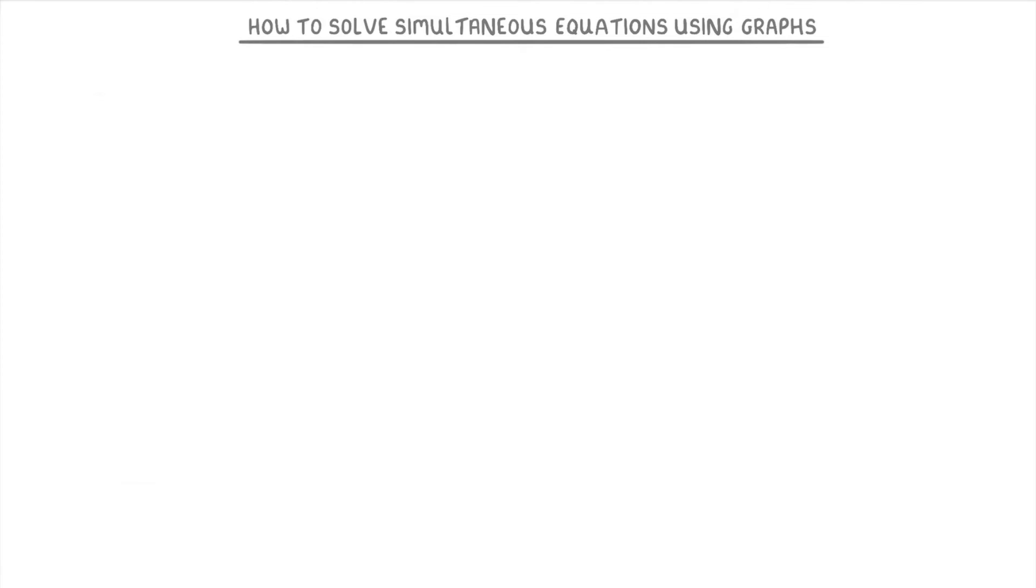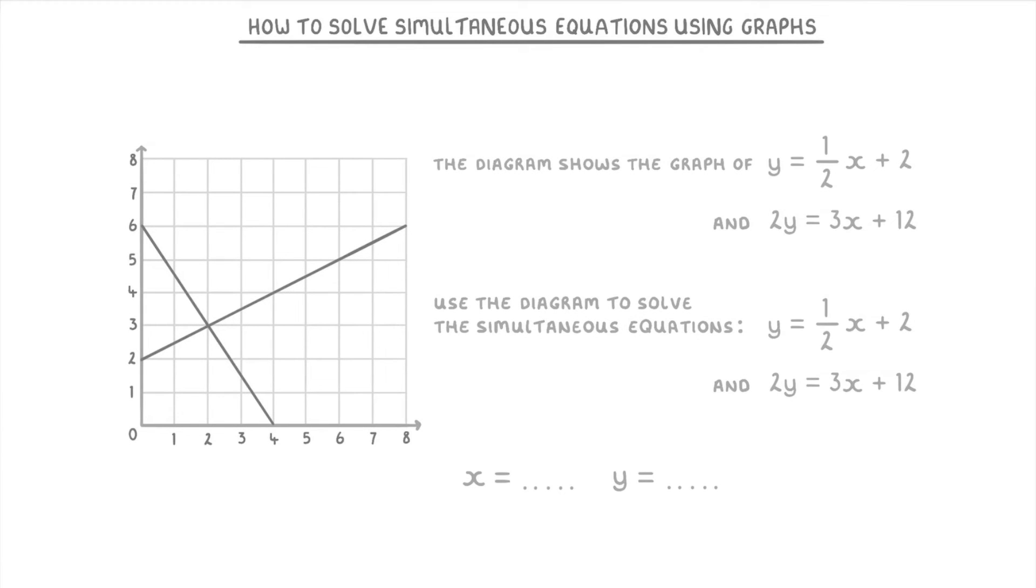Now sometimes you can also get questions like this where they've already drawn both of the lines for you, and all you have to do is find the point of intersection, which in this case would be (2, 3). So you just put x = 2 and y = 3.